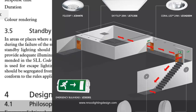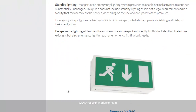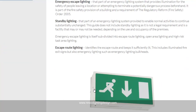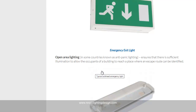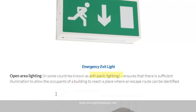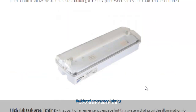I also found a reference to what is called open area lighting — in some countries this is called anti-panic lighting. This ensures there is sufficient illumination to allow occupants of a building to reach a place where an escape route can be identified. So even if it's less than 60 square meters, at least anti-panic lighting should be provided in every room. That is why I always make sure there is at least one lux minimum for every room, even if it's less than 60 square meters.